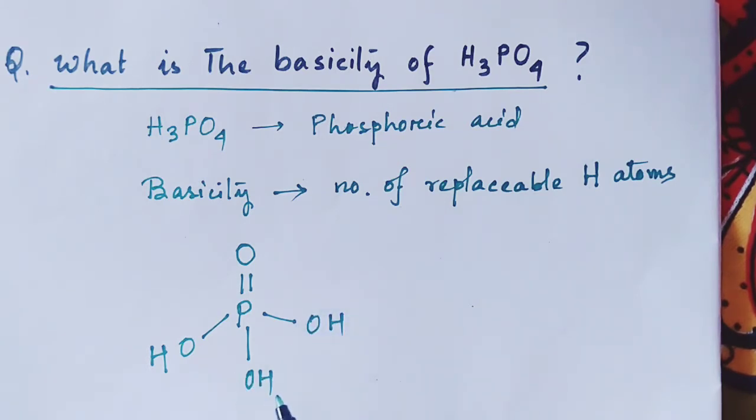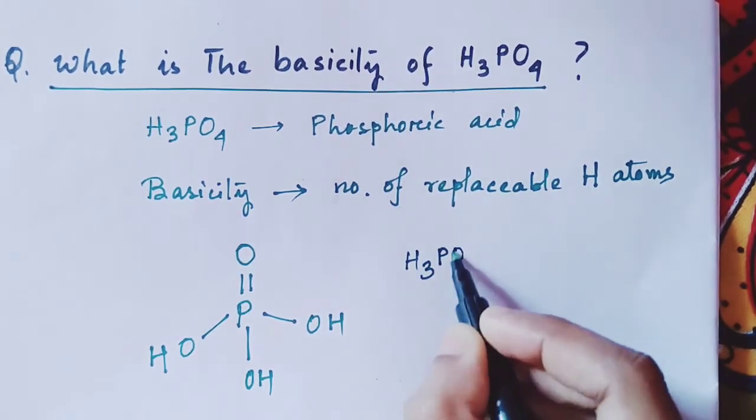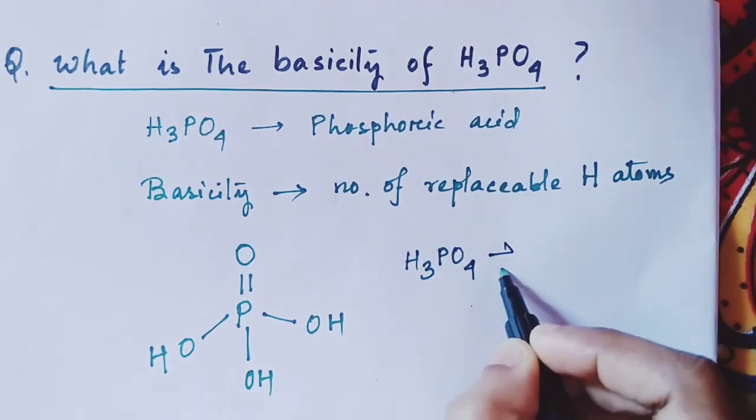So how many OH groups are here? Three OH groups are here, so total three H atoms are replaceable. We can write the equation like this way.